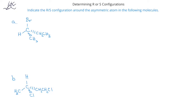Now that we've learned the steps used to identify the R-S configuration of molecules, let's apply those steps to these two molecules. The first step is to assign priorities to each of the groups attached to the asymmetric center. A 1 will be given to the highest priority, and a 4 will be given to the lowest priority. In this case, bromine has the highest atomic number, so bromine will be priority number 1. Hydrogen has the lowest priority because it has atomic number 1.